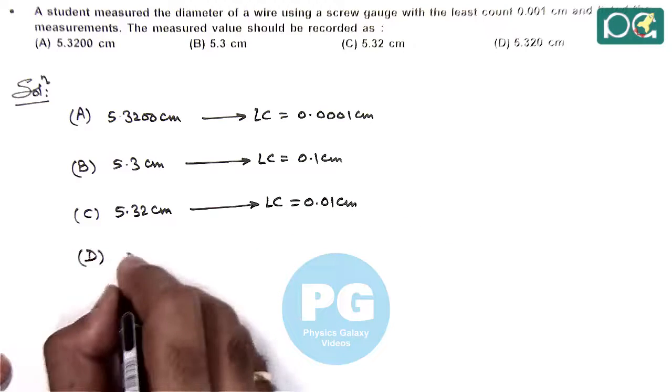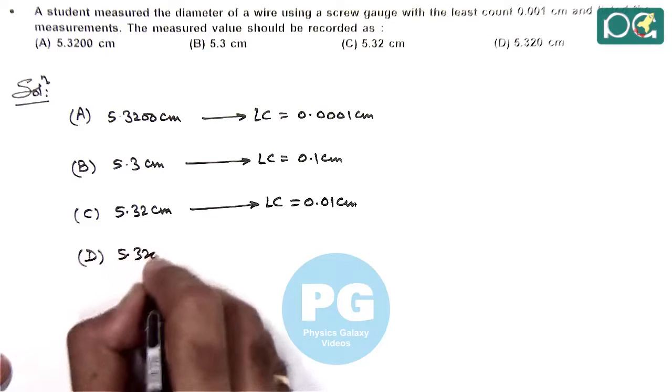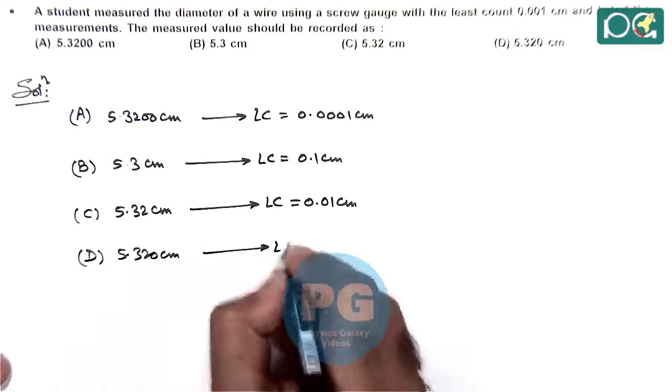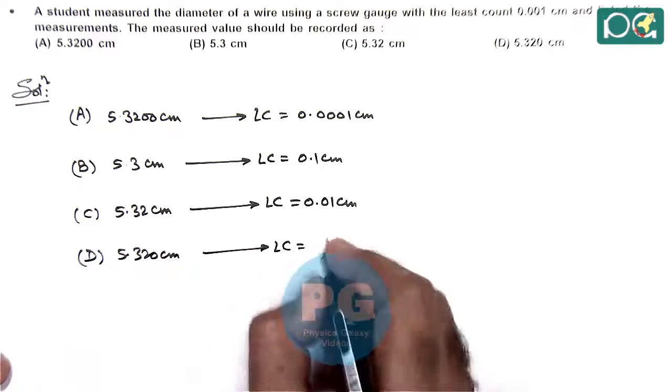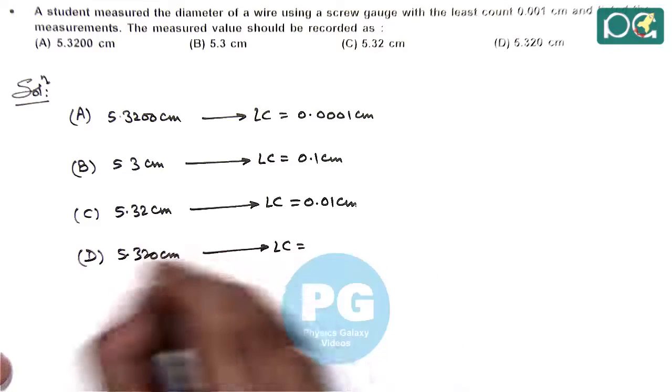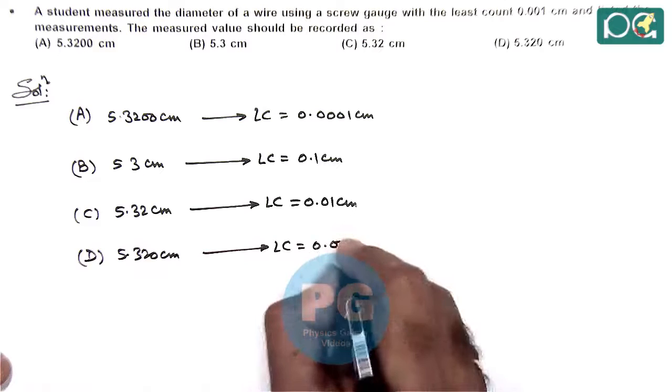And for option D it is 5.320 centimeter. So the least count here we can see the third decimal place of the reading, it is 0.001 centimeter.